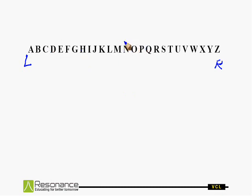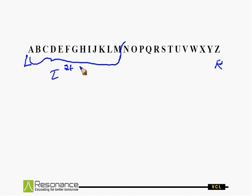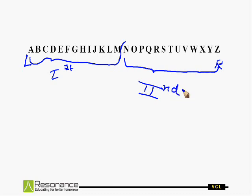Now, because there are 26 alphabets in this complete series, we can divide the series into two parts. The first part from A to M is known as the first half, and the second part from N to Z is known as the second half. The leftmost letter of the first half is A and the rightmost letter is M. Similarly, N is the leftmost letter of the second half and Z is the rightmost letter.